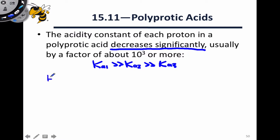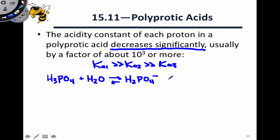For an example, let's consider the deprotonation of phosphoric acid. The first deprotonation: water removes a proton from H3PO4 to give H2PO4⁻ and H3O⁺. This is the first deprotonation, and Ka1 here is 7.5 × 10⁻³.